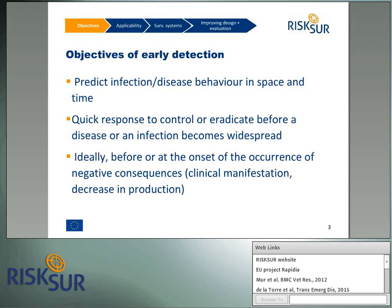What are the objectives of early detection? The main objective is to predict the infection and disease behaviour in space and in time, in order to enable a quick response to control or eradicate before the disease or infection becomes widespread. This occurs ideally before or at the onset of the negative consequences, which could be, for example, the clinical manifestation of the disease or a decrease in production.